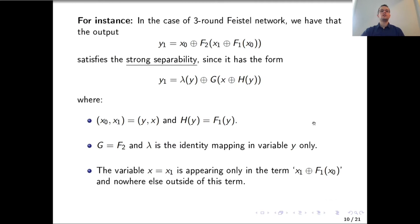As we will see in the following example, one can read the description of functions lambda, g, and h from the expression of the observed branch. For example, for a three-round Feistel network branch y1, it has a form corresponding to strong separability. The lambda function here is an identity mapping. Regarding input blocks, x1 is labeled x and x0 is labeled y. Block z is not present, and we may consider it as a block of length 0.